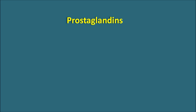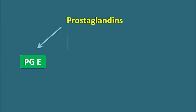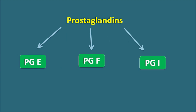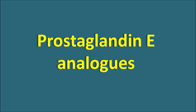Prostaglandins play an important role in our physiological system, but therapeutically we can find three types of prostaglandin analogs: prostaglandin E analogs, prostaglandin F analogs, and prostaglandin I analogs. Today let us discuss the different types of prostaglandins, how they act, and what their clinical uses are. Let us start with the prostaglandin E analogs.